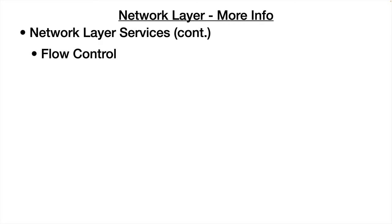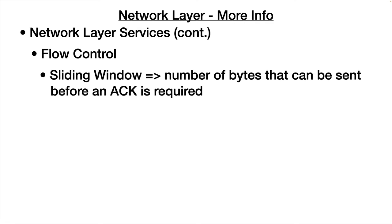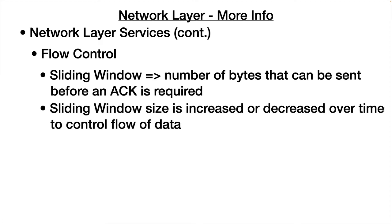Another issue at the network layer is flow control. This is handled with something called sliding windows — the number of bytes that can be sent before an acknowledgement is required. The size of the sliding window can be increased or decreased over time to control the flow of data.